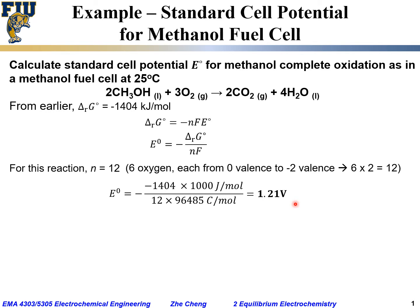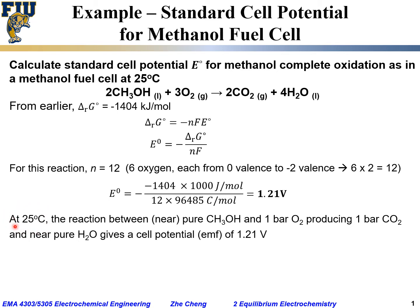We get the standard cell potential of 1.21 volts. This applies under open circuit conditions. For such a methanol fuel cell at 25 degrees Celsius, with pure methanol, one bar of oxygen, one bar of CO2, and pure liquid water, the cell potential — sometimes called the EMF or electromotive force — is 1.21 volts.